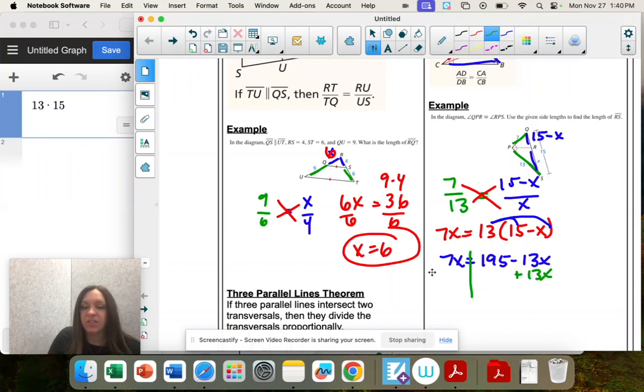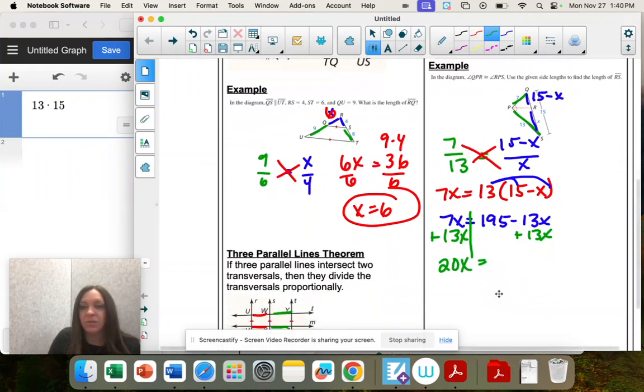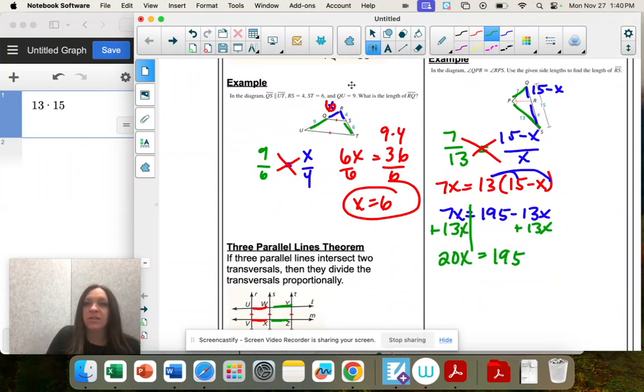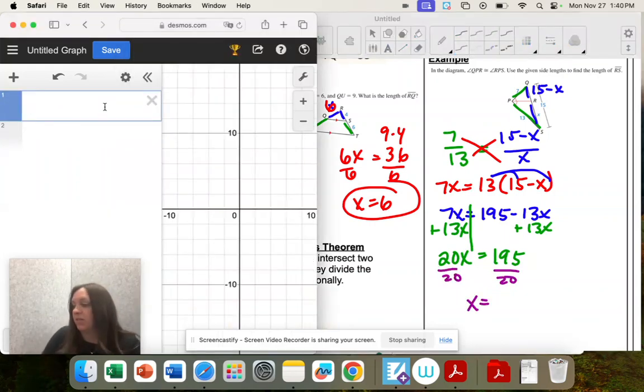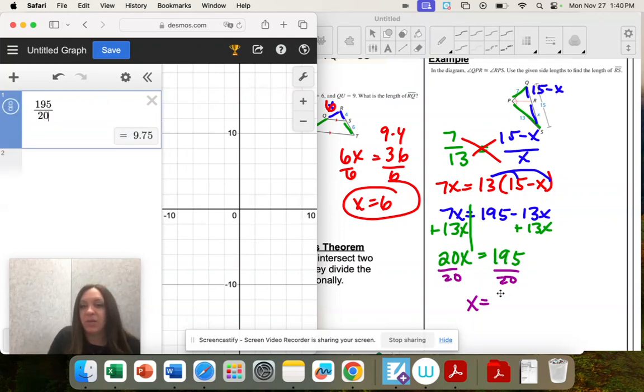I'm going to add this 13x over here and get 20x equals 195. Now to get x by itself, I'm going to divide both sides by 20. So 195 divided by 20 is 9.75.